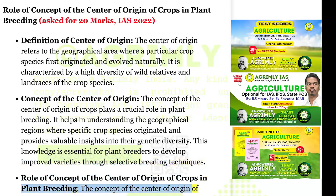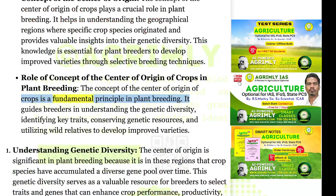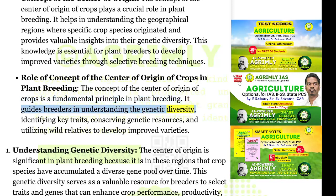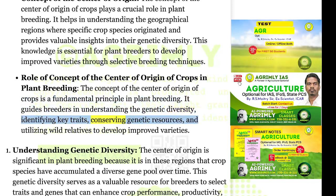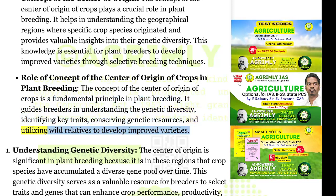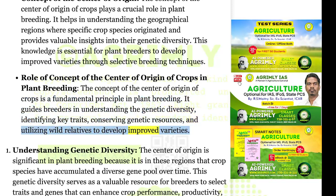The concept of the Center of Origin of Crops is a fundamental principle in plant breeding. It guides breeders in understanding genetic diversity, identifying key traits, conserving genetic resources, and utilizing wild relatives to develop improved varieties.